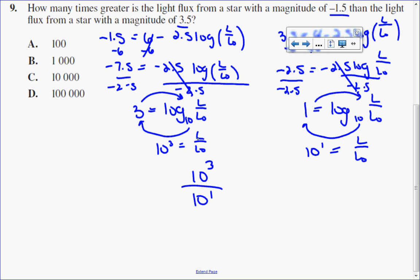That would be 10³⁻¹ = 10² = 100. So the answer to question number 9 is A.